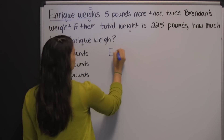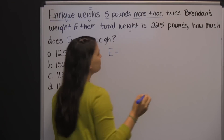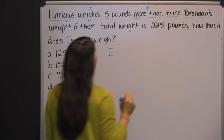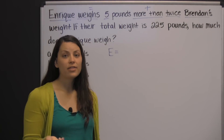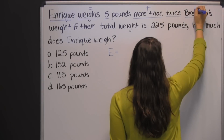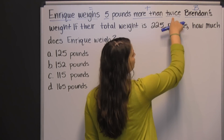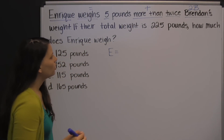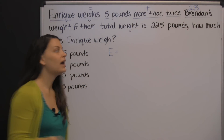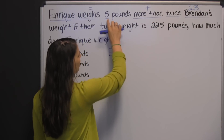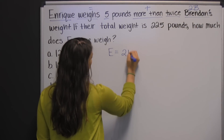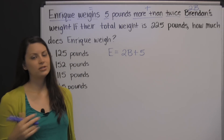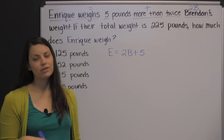Enrique weighs — this is another way of saying Enrique is, and 'is' in math is an equal sign. Since we don't know Enrique's weight, we'll use a variable; E makes sense. So Enrique is five pounds more than twice Brendan's weight. 'More than' tells us to add. We also don't know Brendan's weight, so we need another variable — B makes sense. 'Twice' tells us to multiply by two, so twice Brendan's is 2B. 'More than' also tells us to switch around the order, so instead of five plus 2B, we write 2B plus five. That's the commutative property of addition.